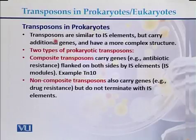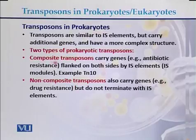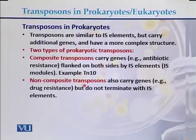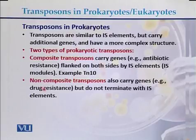Transposons are similar to IS elements but carry additional genes and have a more complex structure. There are two types of prokaryotic transposons: composite transposons and non-composite transposons. Composite transposons carry genes like antibiotic resistance genes and are flanked on both sides by IS elements, while non-composite transposons carry genes like drug resistance but do not terminate with IS elements.